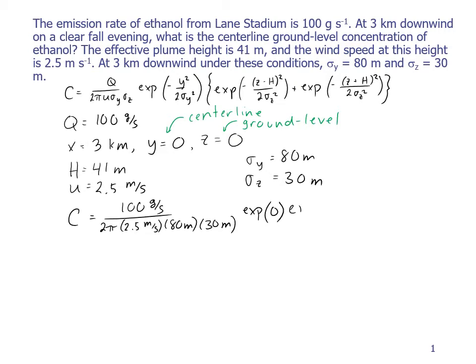And then for the Z terms, we have the exponential of minus Z minus H, so that's 0 minus 41 meters squared, over 2 times sigma Z, which is 30 meters squared.